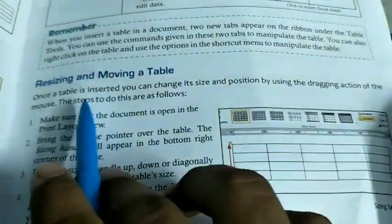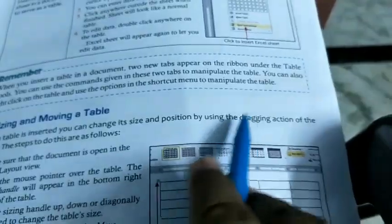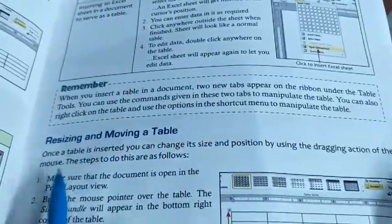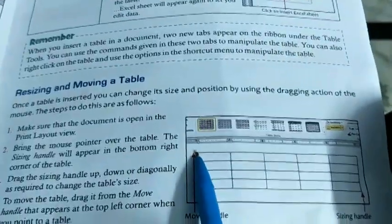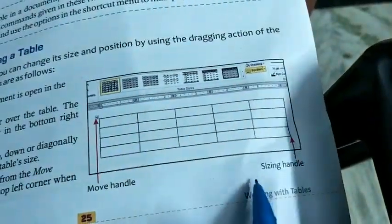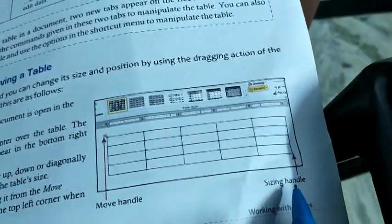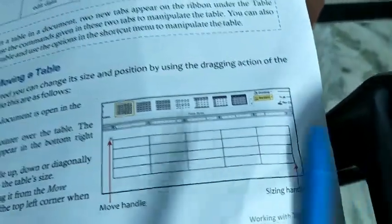That is the way to resize and move a table. Once a table is inserted, you can change its size and position by using the dragging action of the mouse. Through the Move Handle symbol you can move the table, and through the Sizing Handle symbol you can resize the table.